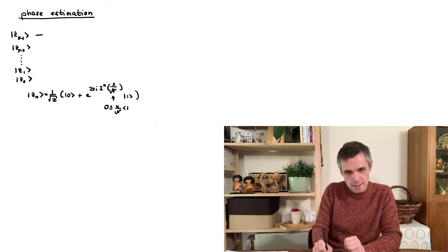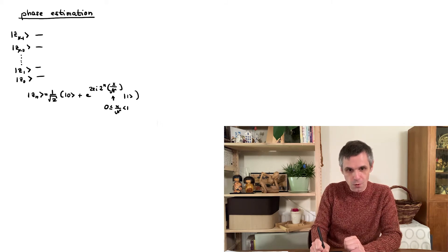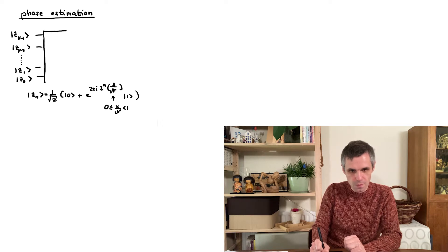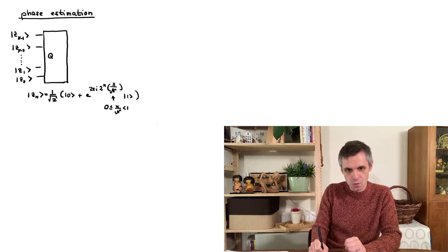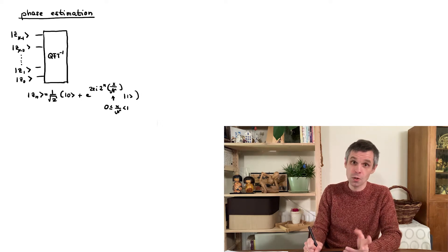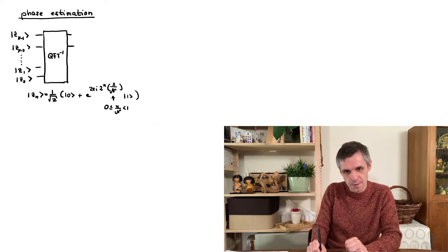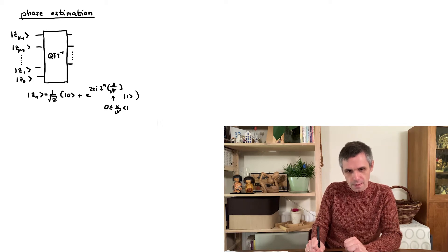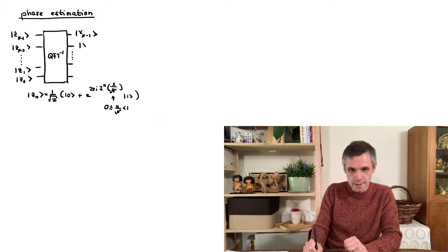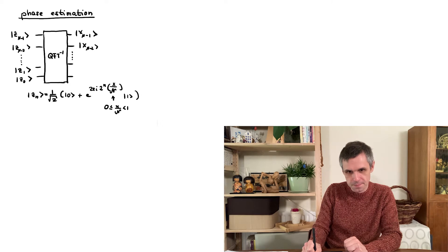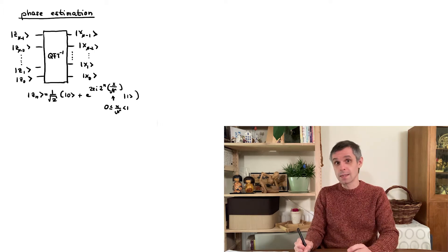And now we want to run this through the inverse of the quantum Fourier transform, which we can just as well treat as a black box because there we just need to apply all the gates in inverse order and use the inverse of the gates where this is necessary. And then the result would be our computational basis state x. What does this allow us?